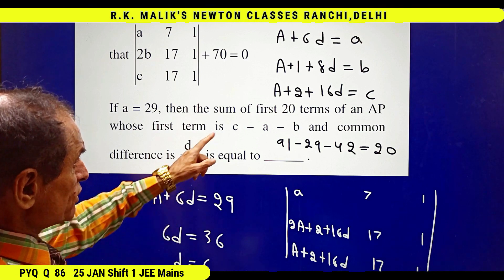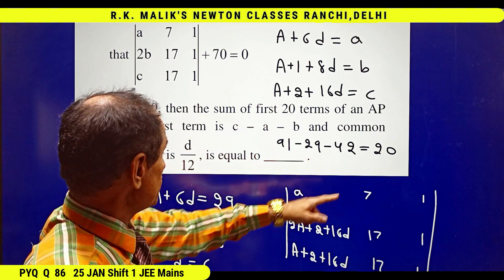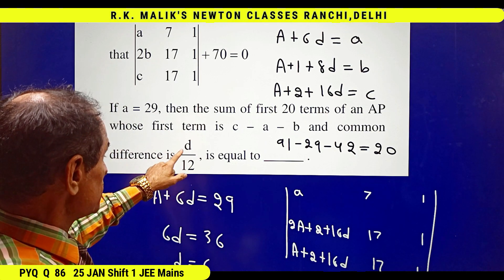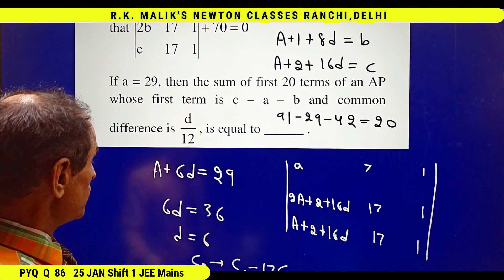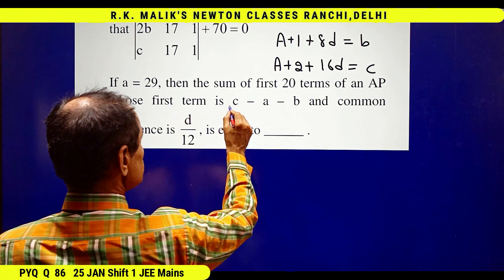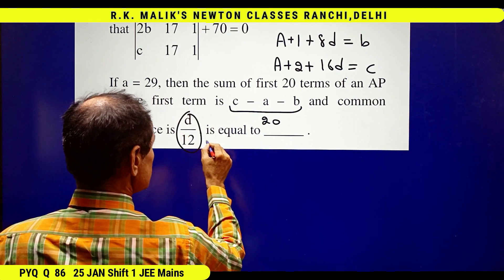Hence we have to find the sum of first 20 terms of an AP whose first term is 20 and common difference is 6 by 12.